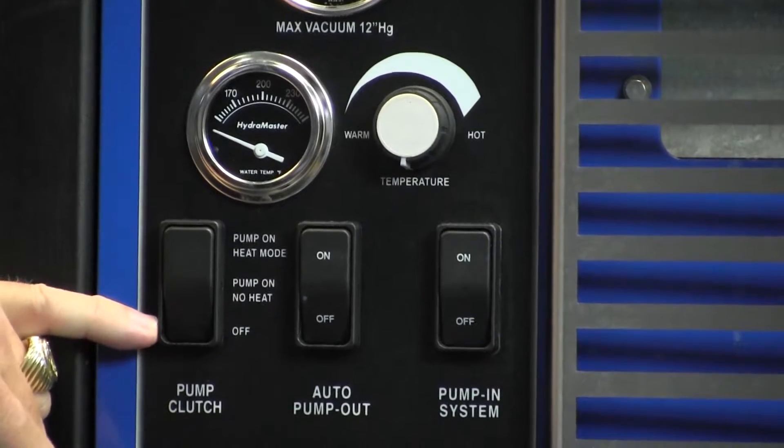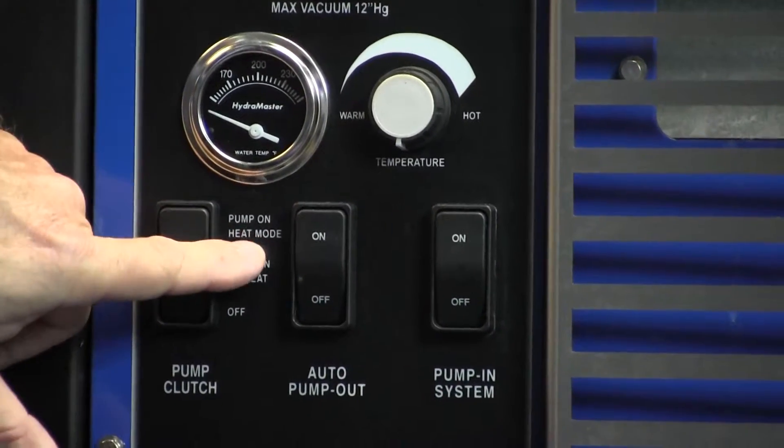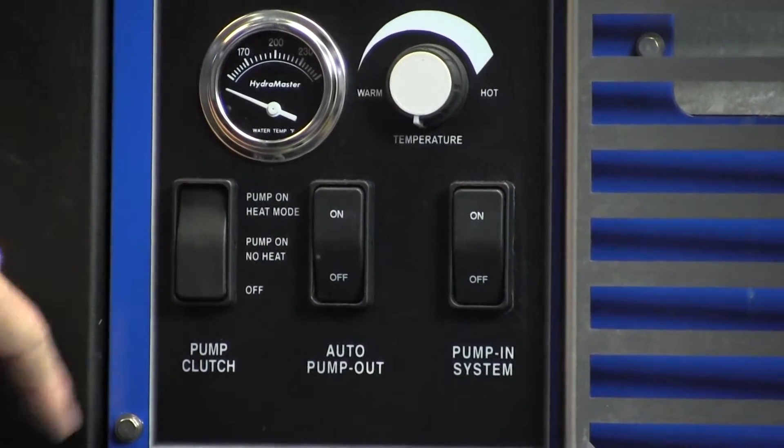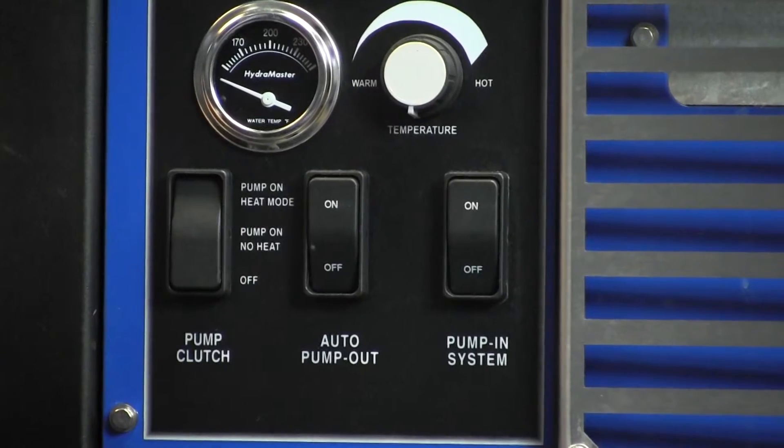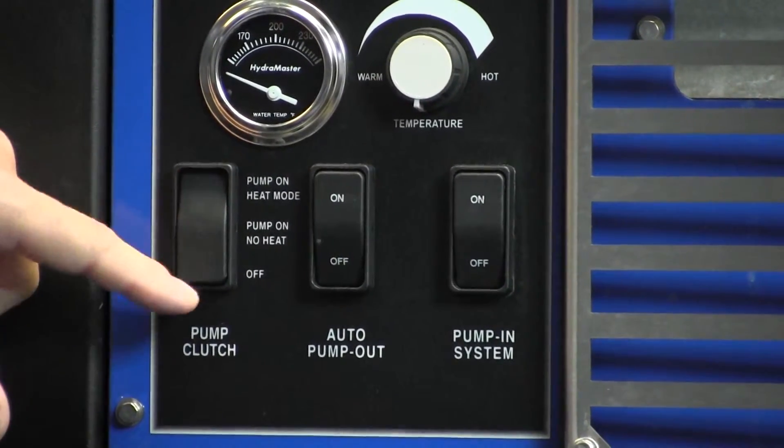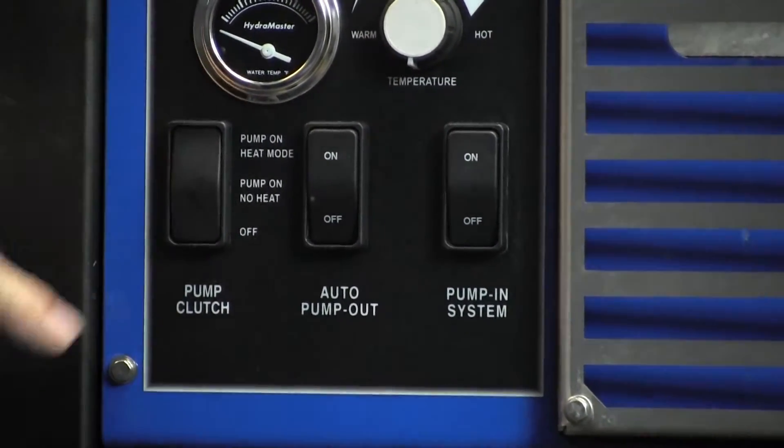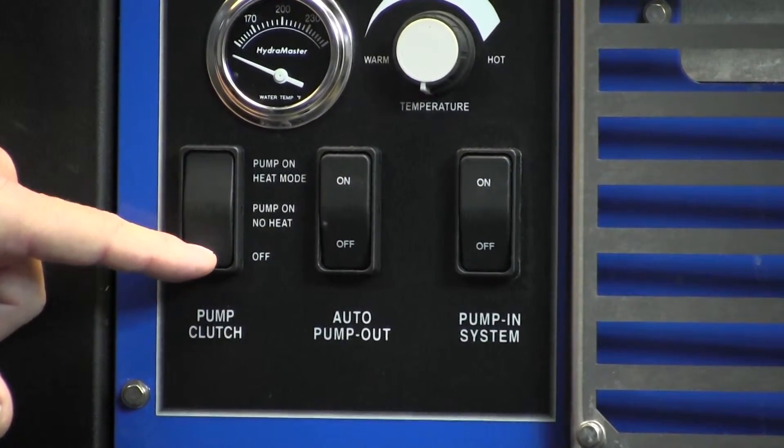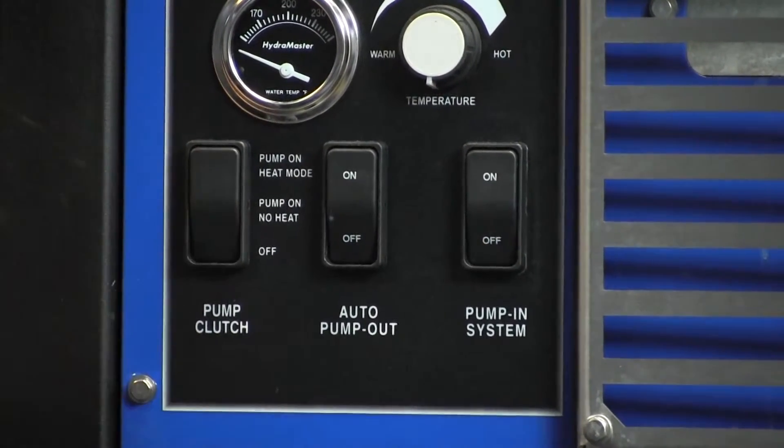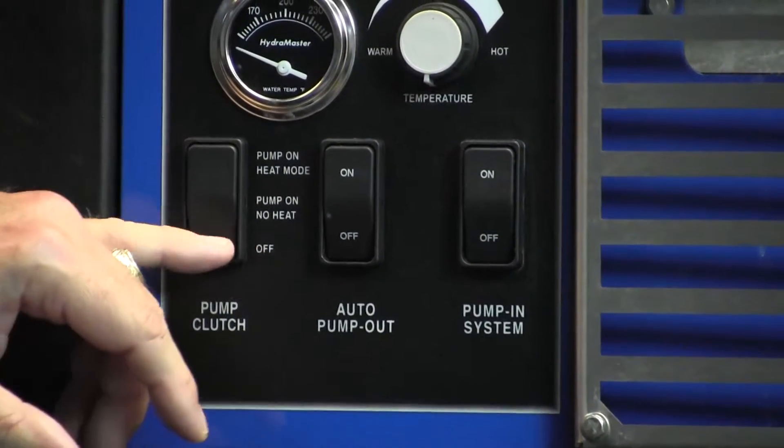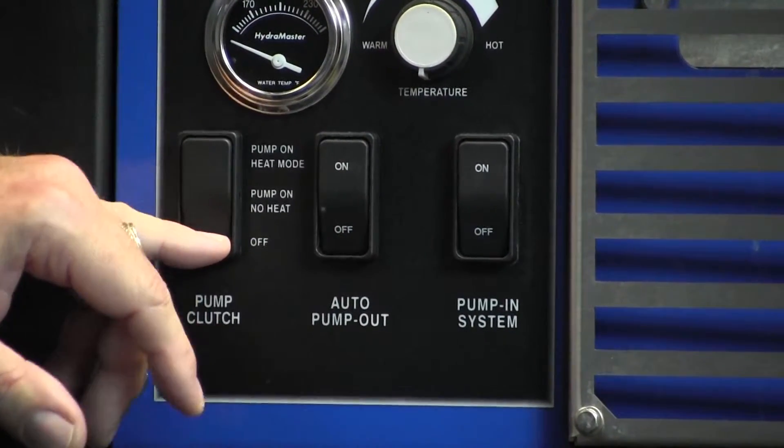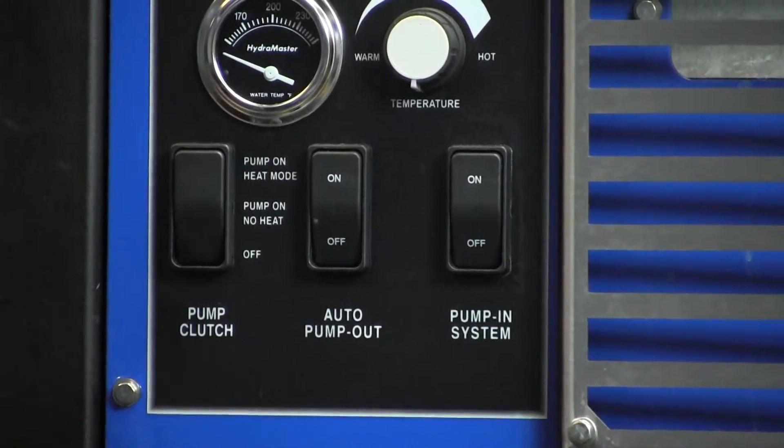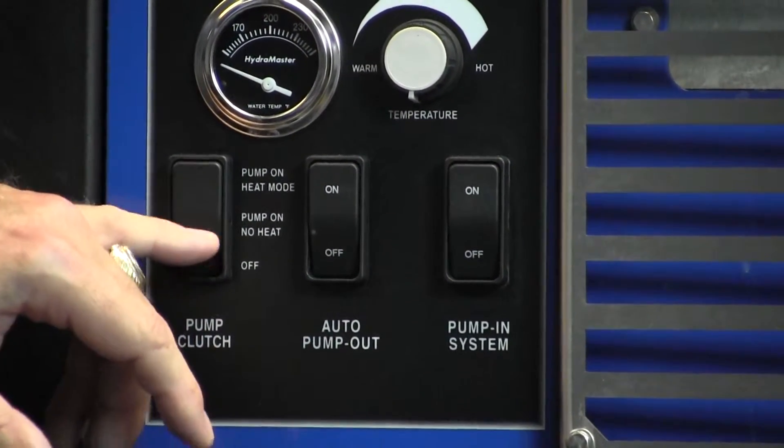We have our pump clutch switch here. At the top is pump on in heat mode, which is for lower pressures when doing carpets and fabrics. You have pump on with no heat, which allows you to raise your water pressure higher. And then you have pump off for evacuation jobs where you're only using the blower and vacuum system. This saves the pump and clutch from running all day when you don't need it.